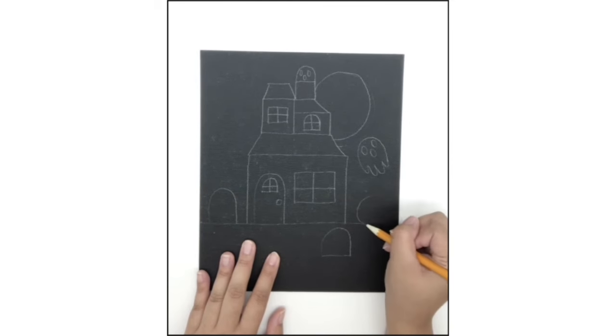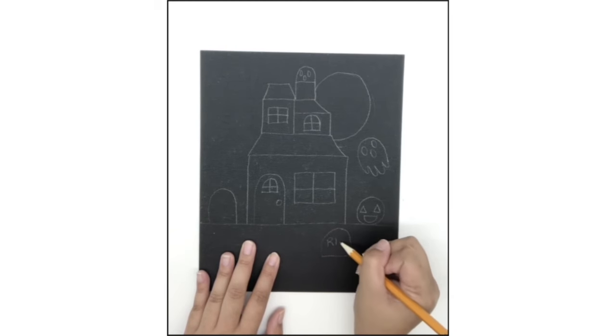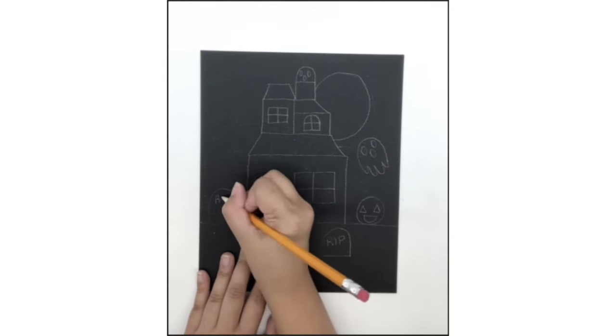Step 7. On the right side of the house, draw a circle for our jack-o-lanterns. You can draw any face you want. And then write R.I.P., or rest in peace, on the tombstones.